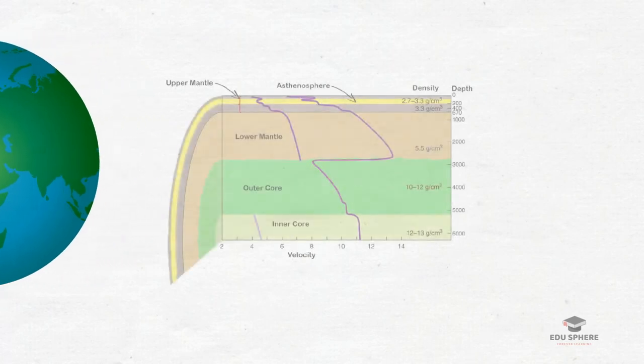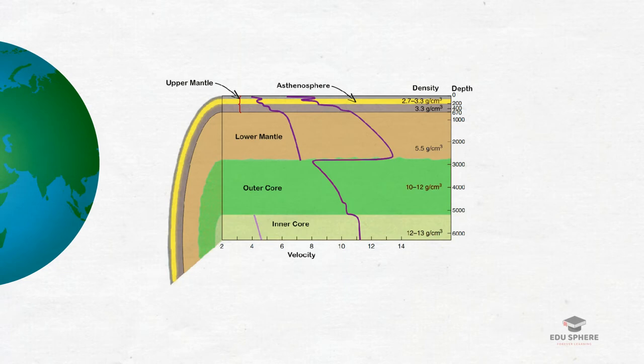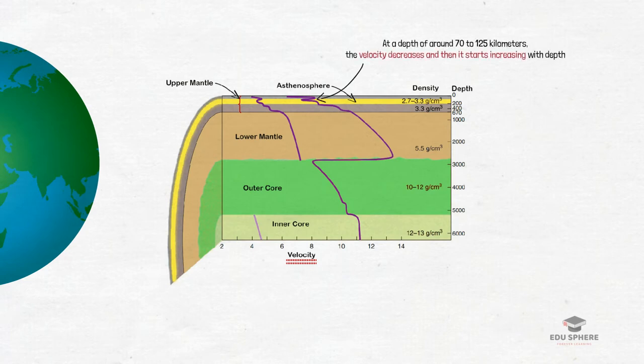Generally, seismic waves increase in velocity with depth. But you can see in this figure, the increase in velocity of the seismic waves with depth is not uniform. In this figure, the velocity measurement starts from the crust portion and it increases with depth. But at a depth of around 70 to 125 kilometers, the velocity decreases and then again it starts increasing as we go deeper. So, this zone has been called the low velocity zone which is a part of the larger layer called the asthenosphere.